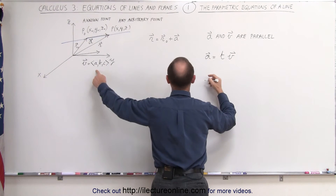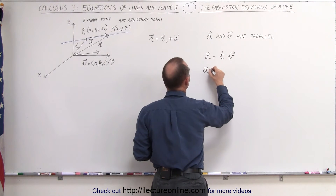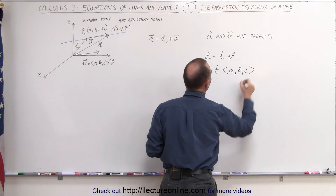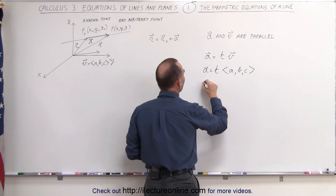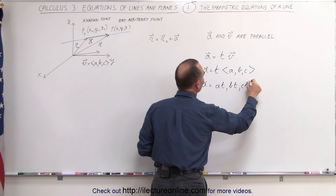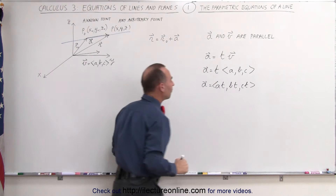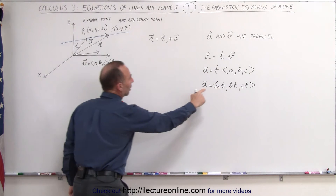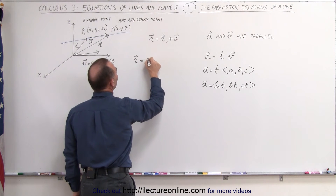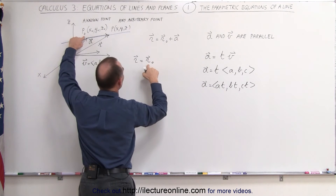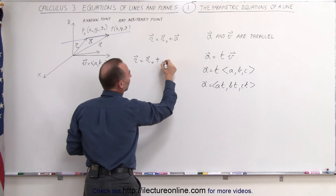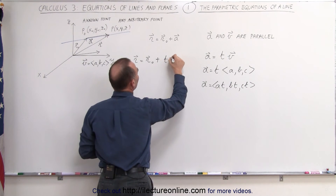Now let's write the v vector the way we have it over here. We can say the a vector is equal to t times the v vector, which has the components a, b, and c. Multiplying that together, the a vector equals (at, bt, ct). Plugging that into our equation, the position vector r is equal to r sub naught plus the a vector, which we can now write as t times the v vector.